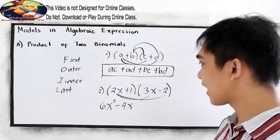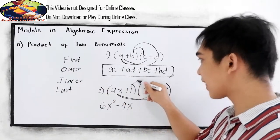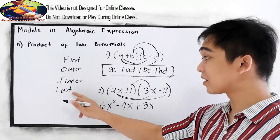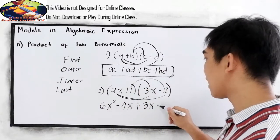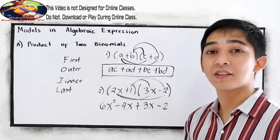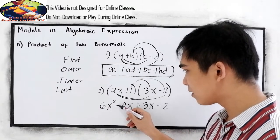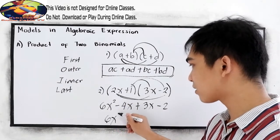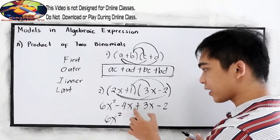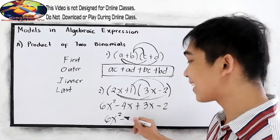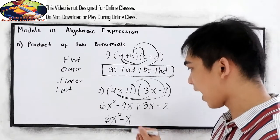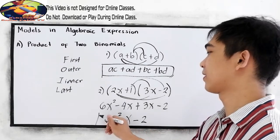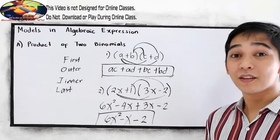The Inner terms: 1 times 3x gives us positive 3x. The Last terms: 1 times negative 2 gives us negative 2. Now combine like terms: negative 4x plus 3x equals negative x. So the answer is 6x² − x − 2.